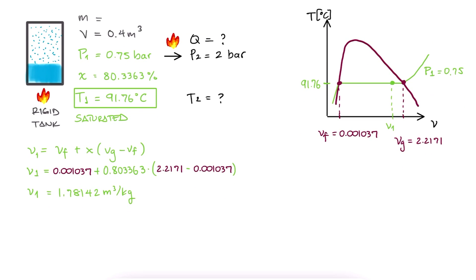Since the constant mass of water is in a rigid tank, meaning same volume, meaning same specific volume, V2 is this same value after adding the heat.